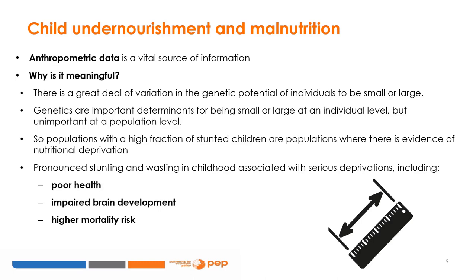This takes care of the why we care theme, which means we can move on to measurement — discussing how we know whether a child receives adequate nutrition. We start with anthropometric data, which is a vital source of information. While genetics is an important determinant of being small or large at the individual level, it is unimportant at the population level. We know that populations with a high fraction of stunted children are populations where there is evidence of nutritional deprivation, and stunting is associated with serious deprivations including poor health, impaired brain development, and higher mortality risk.